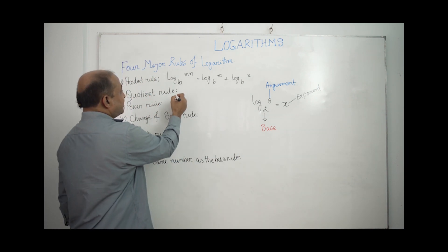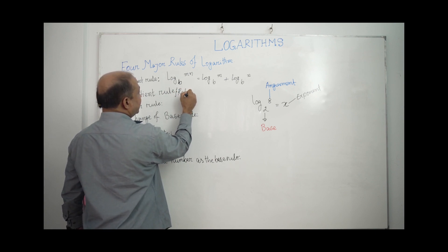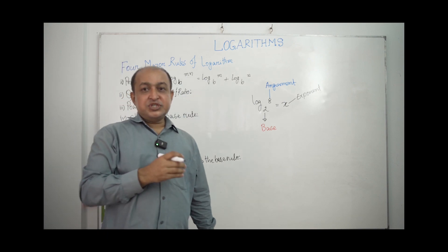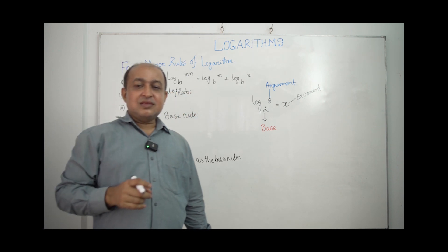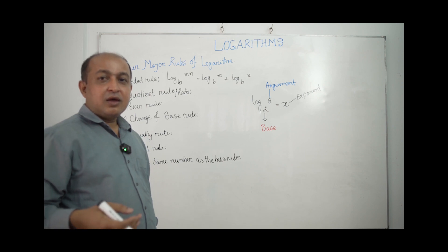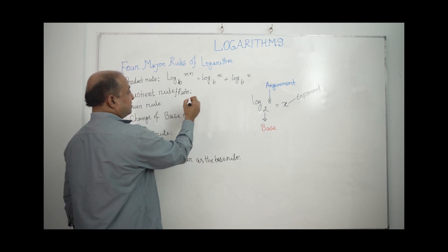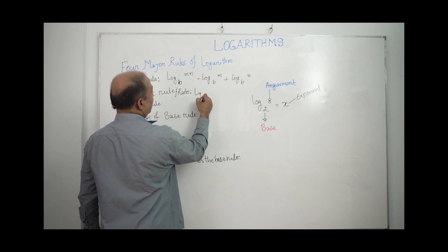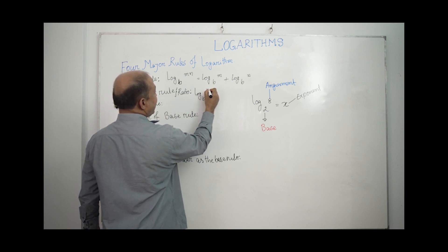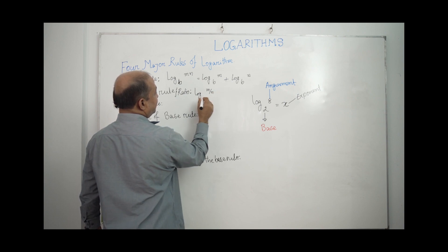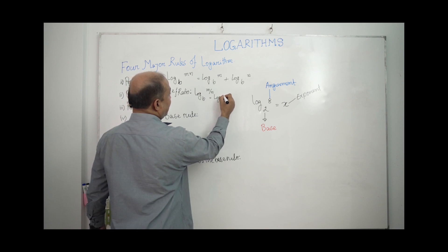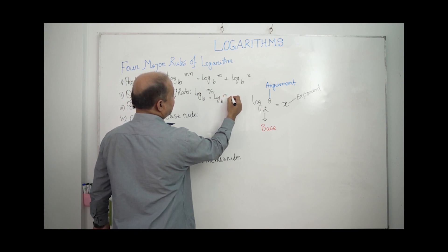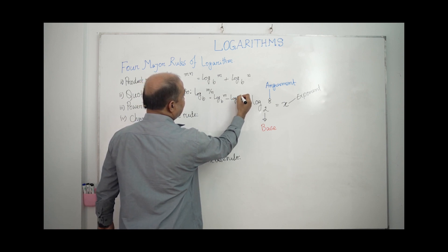The second rule is the ratio rule. The ratio rule states that log base b of m/n equals log base b of m minus log base b of n.